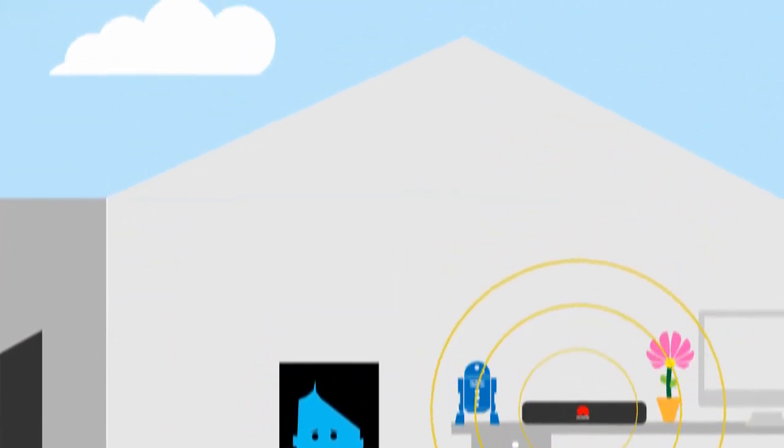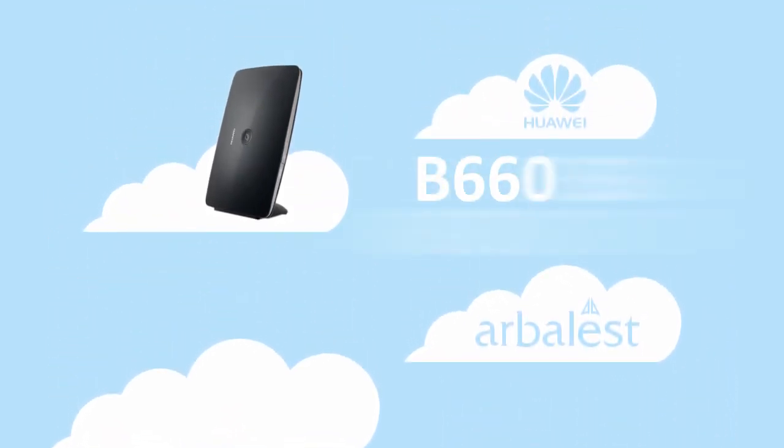So what are we going to get to see next, Dad? Maybe a robot or a... The B660 3G router. It's that good.